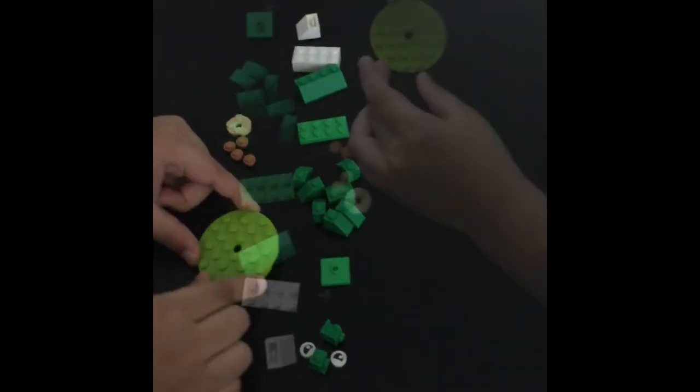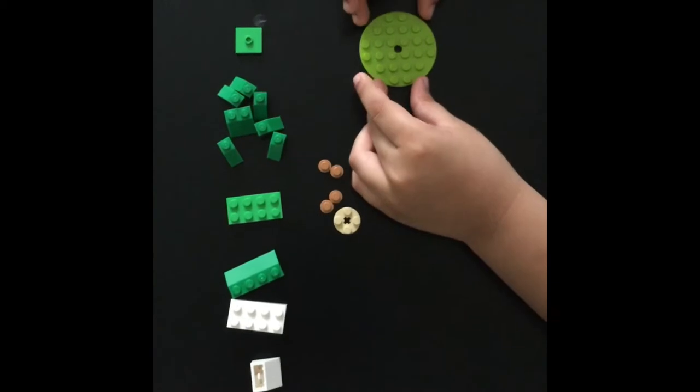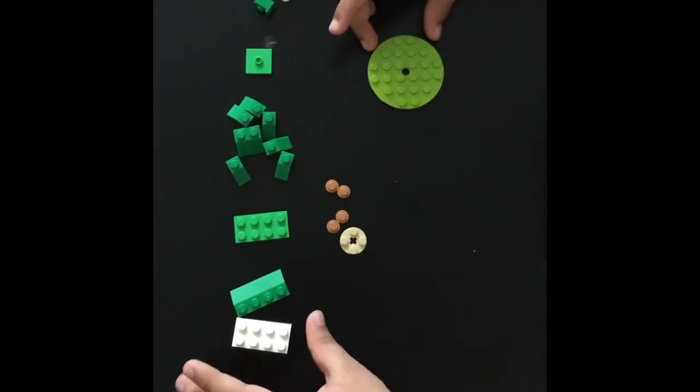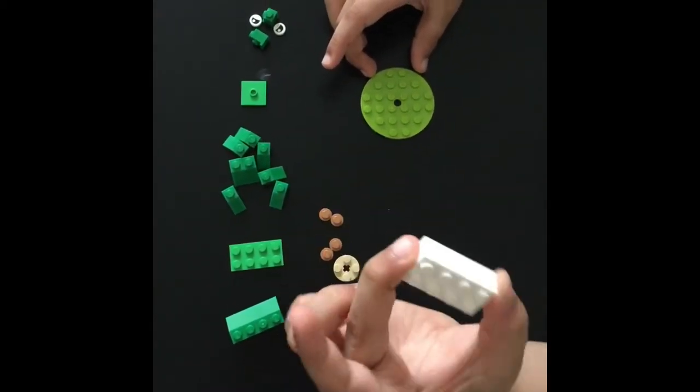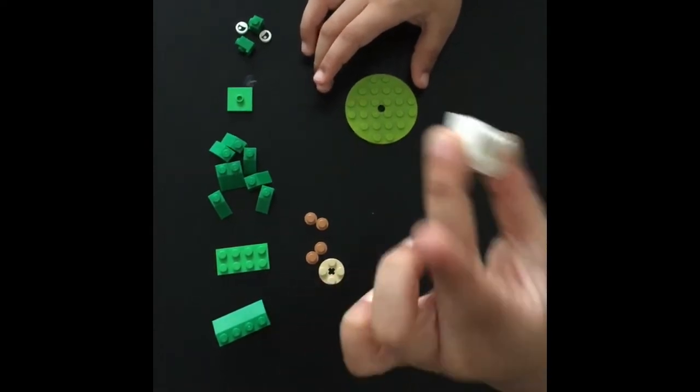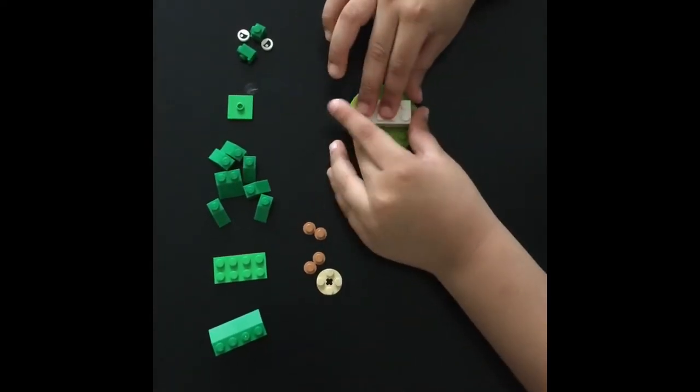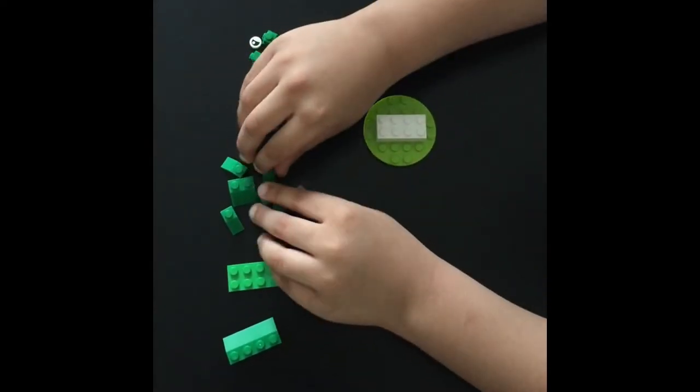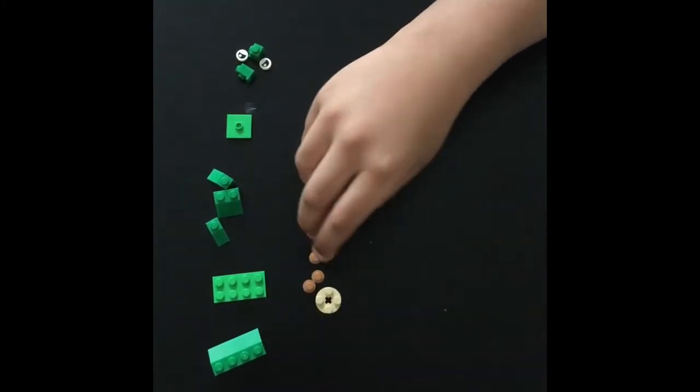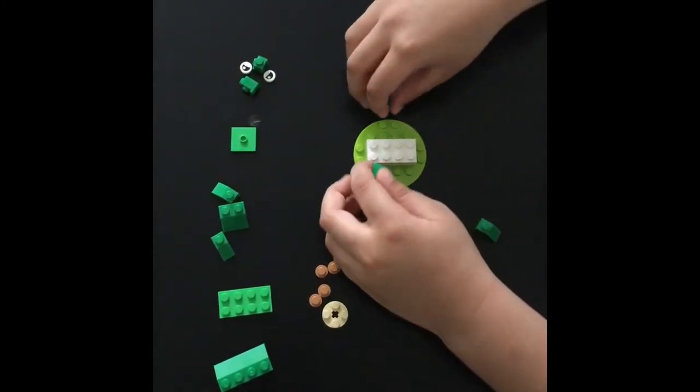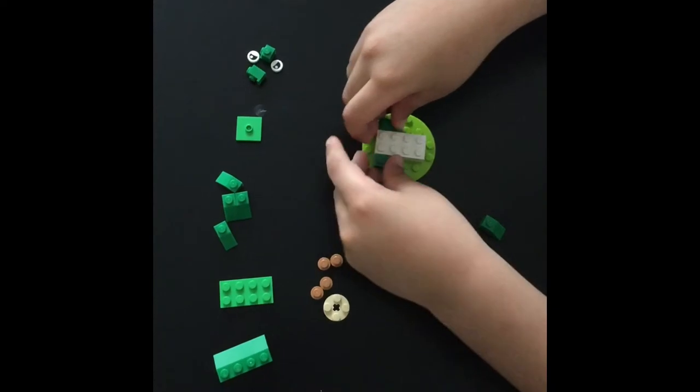Now let's get started. First we need to take this circle. Then we need four side stick together pieces like this. Then we need these pieces to attach for his legs.